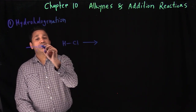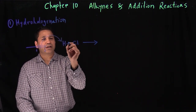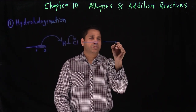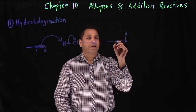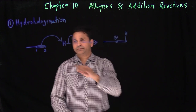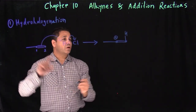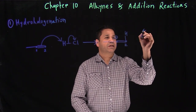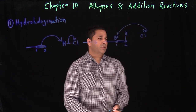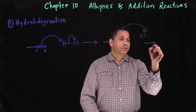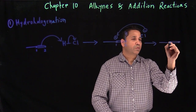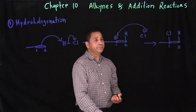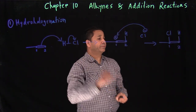For the mechanism: the double bond is your base — that's your electron pair. The base picks up the hydrogen, and the electron pair goes on chlorine. Carbon two gets the hydrogen, and carbon one gets the positive charge because we're taking electrons away from it. The Cl minus then attacks the positive carbon to form the bond.